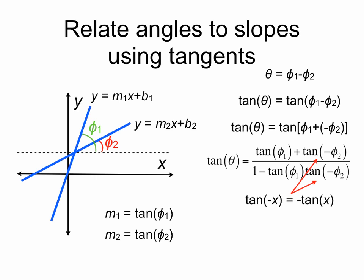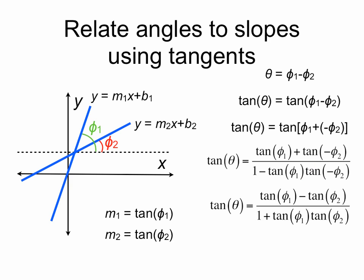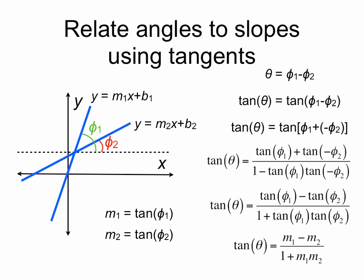Using that relation and plugging it into the tan of minus phi2 terms, the minus sign comes out of the tangent. So we have tan of theta equals tan of phi1 minus tan of phi2, over 1 plus tan of phi1 times tan of phi2. Now we can plug in the slopes to replace tan of phi1 and tan of phi2 with m1 and m2, giving us tan of theta equals m1 minus m2 over 1 plus m1m2.